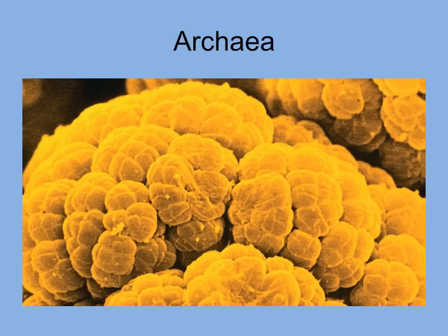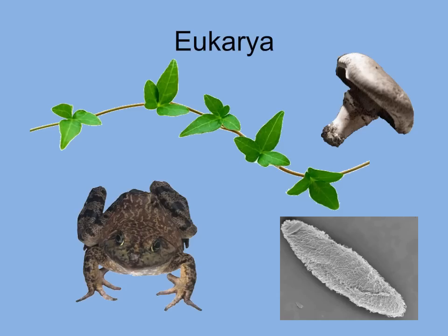The prokaryotes known as archaea live alongside bacteria in boiling hot springs and intestines. However, archaea are very different in one characteristic — only a few pathogenic archaea have ever been found. And last but not least, eukarya: other than bacteria and archaea, all other organisms are composed of eukaryotic cells.